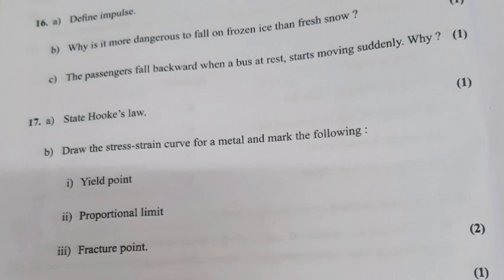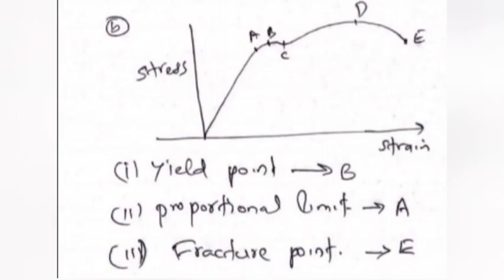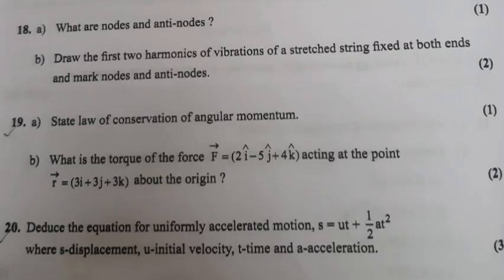Question 17a: State Hooke's law. 17b: Draw the stress-strain curve for a metal and mark the following: (1) yield point, (2) proportional limit, (3) fracture point. Answer 17a: For small deformation, stress is directly proportional to strain. Answer 17b: (1) Yield point B, (2) Proportional limit A, (3) Fracture point E.